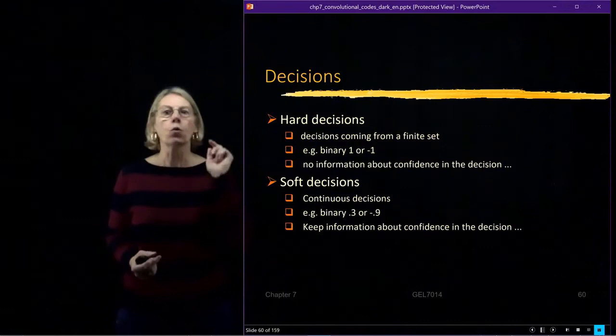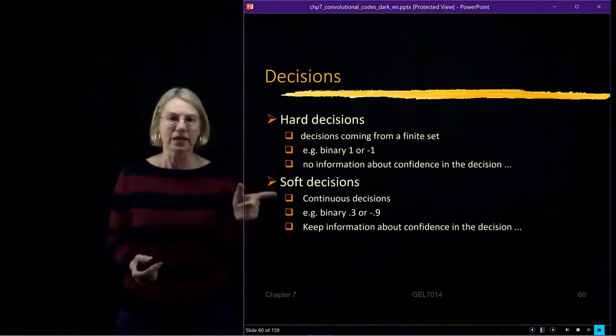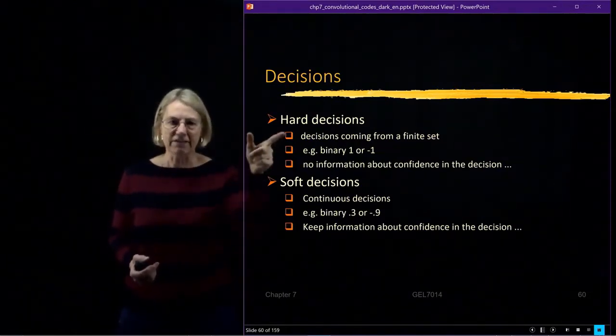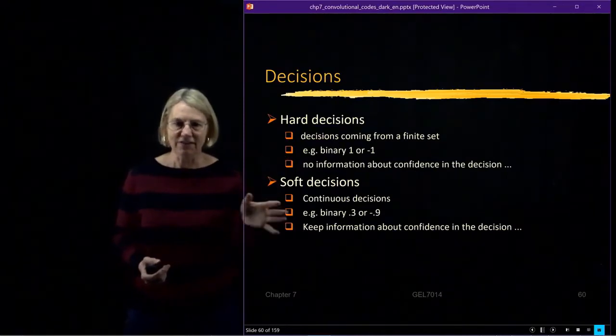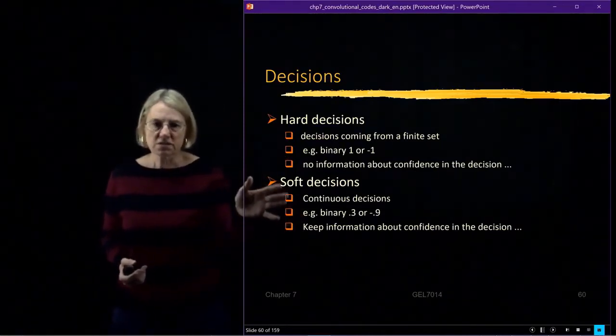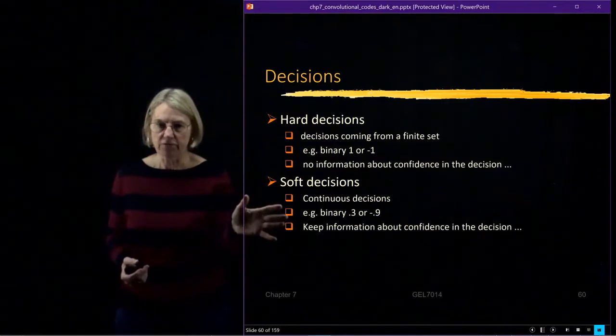Which one is going to be more complex? Oh, soft decisions are going to be more complex. I can't just work on a finite set of values. I have to start working on continuous ones. So this is more complex, but higher performance.